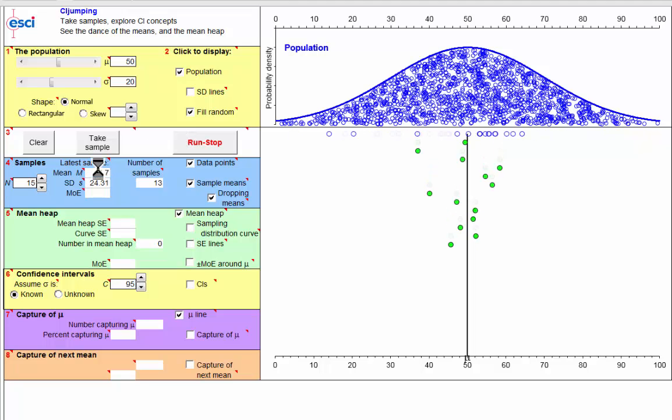Now I've gone back to samples of size 15, and I'm running a sequence of samples, and I'm going to pile up the sample means down at the bottom here to form the mean heap. That's a pile of all the sampling means from a large number of samples, all of size n equals 15.